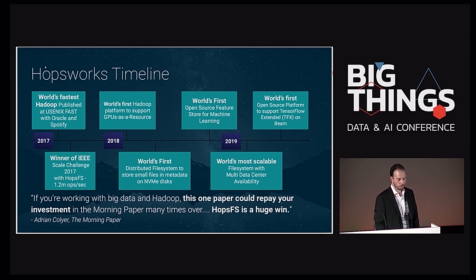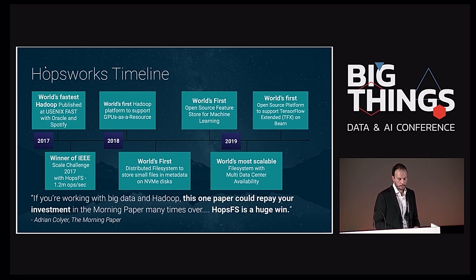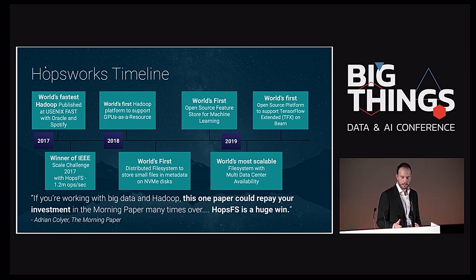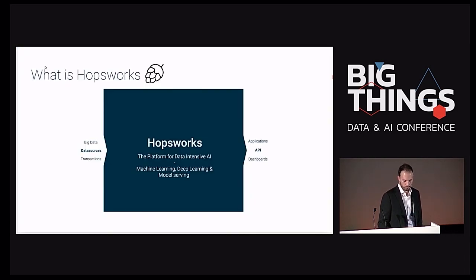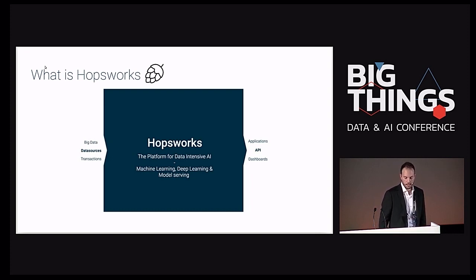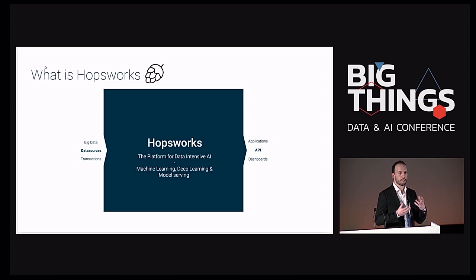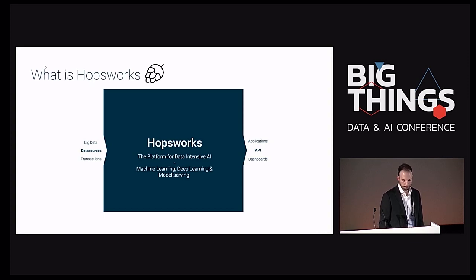What is HopsWorks? HopsWorks is an open source project that has been going on for a few years now. One of the most recent additions is the feature store, and what we are also showing here today is how to run TensorFlow Extended on HopsWorks with Apache Beam and Flink. HopsWorks is a platform for doing data-intensive AI. You bring in different data sources, apply your transformations, do your machine learning and deep learning, and the output is different applications and APIs to access all this data and functionality.